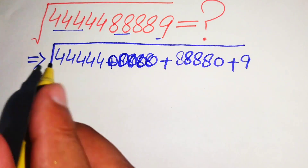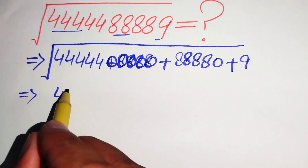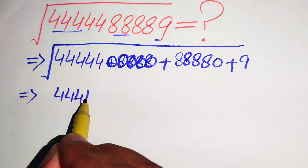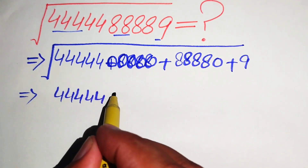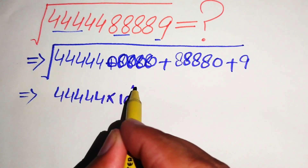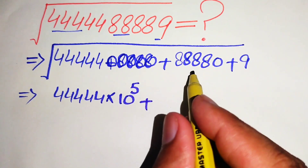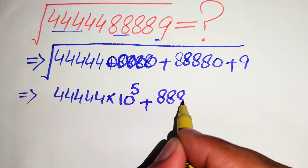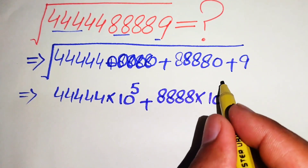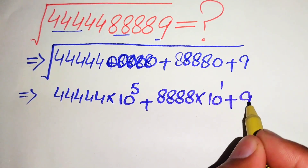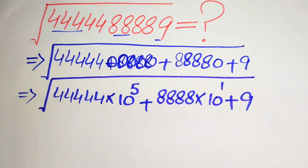Now we rewrite this expression. We write 5 times of 4 — because there are 1, 2, 3, 4, 5 zeros — as 10 raised to power 5. Then we write 4 times of 8 with 1 zero as 10 raised to power 1, plus 9, and take its whole square root.